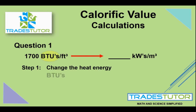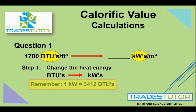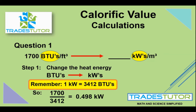We're going from BTUs to kilowatts — not changing the volume yet, just changing one version of heat into another. What we have to remember is that one kilowatt is 3,412 BTUs. So we take the number of BTUs we have and divide it by 3,412 to get 0.498 kilowatts.